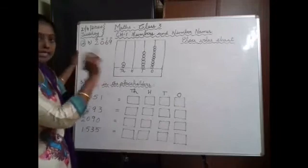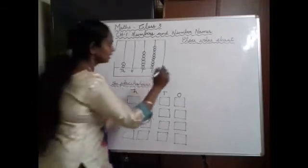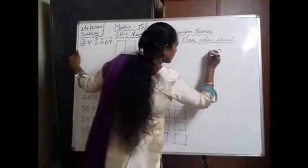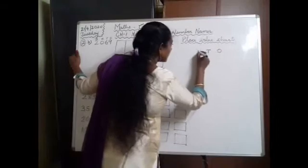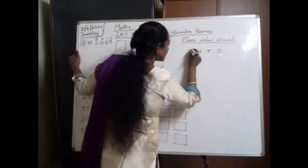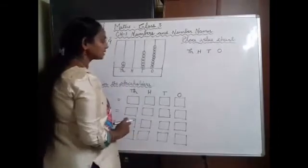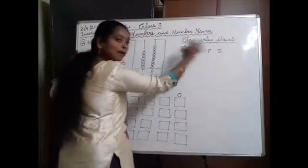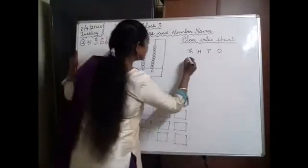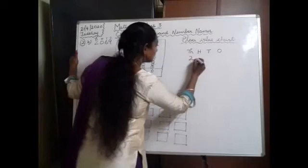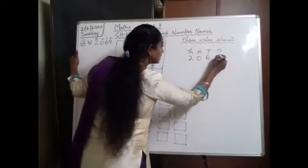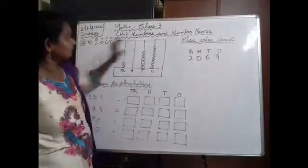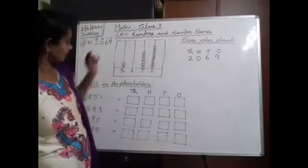Now we are going to write the place value chart. First write 1s, 10s, 100s, 1000s. Then represent this number in the place value chart: 2,069. Have you understood this?